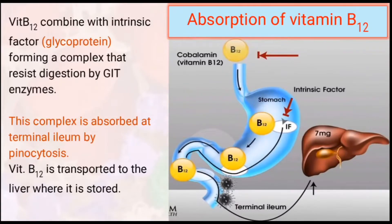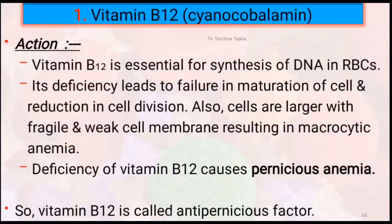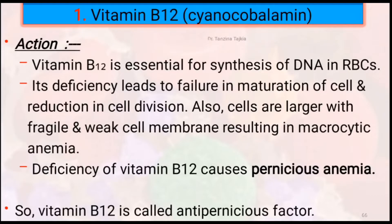Vitamin B12 is transported to the liver where it is stored. It is essential for the synthesis of DNA in RBCs. Its deficiency leads to failure in maturation of the cell, resulting in a reduction in cell division. Cells are also larger with fragile and weak cell membranes, resulting in macrocytic anemia. Therefore, deficiency of vitamin B12 causes pernicious anemia, and vitamin B12 is also called the anti-pernicious factor.